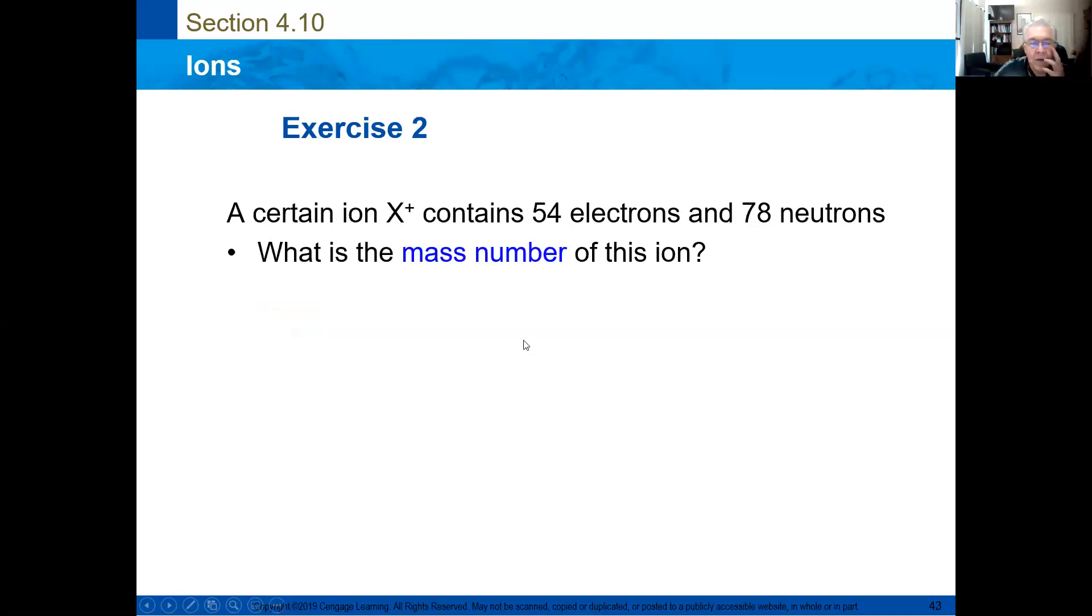A certain ion positive one contains 44 electrons and 28 neutrons. It contains one more electron that was lost. So, 44 plus one is 45 electrons and protons that are equal. So 45 plus 28 equals 133. That's the atomic mass that is obtained by adding protons plus neutrons.